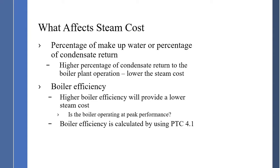What affects steam costs? Percentage of makeup water and percentage of condensate return — higher percentage of condensate return to the boiler operation will lower the steam cost. Last, boiler efficiency: higher boiler efficiency will provide a lower steam cost. Is the boiler operating at peak performance? Boiler efficiency is calculated using PTC 4.1 and should be monitored daily.